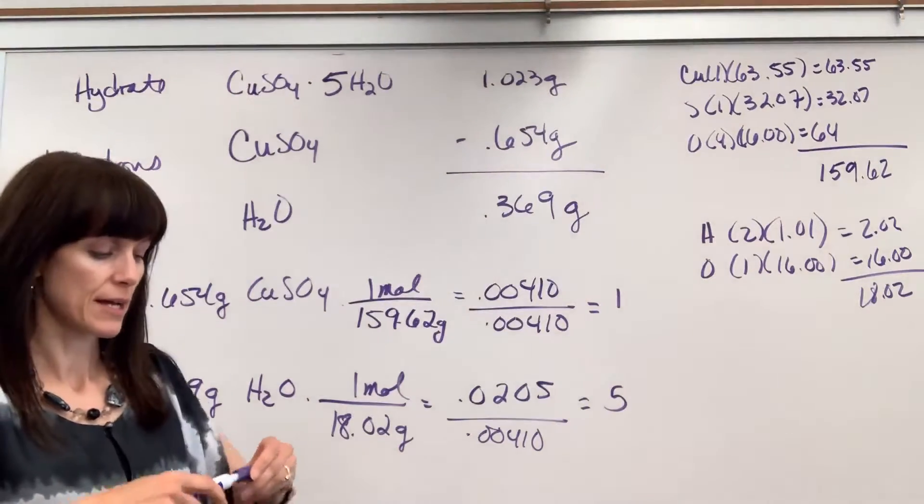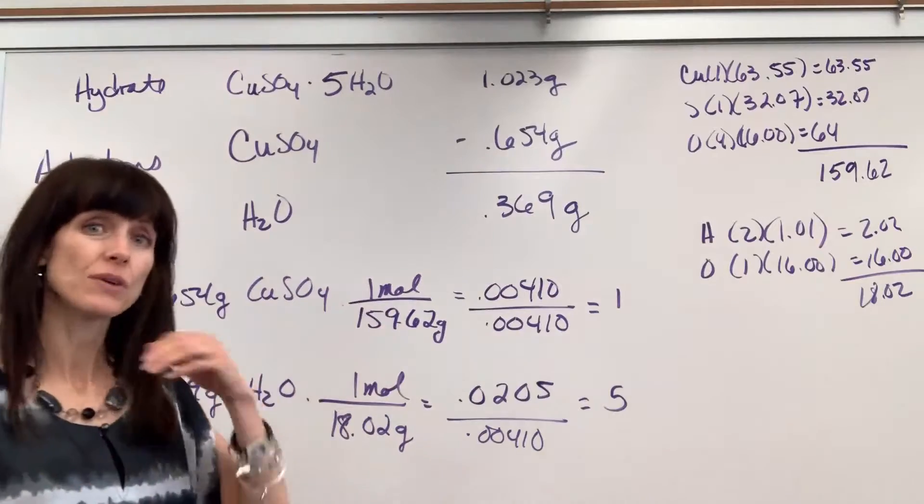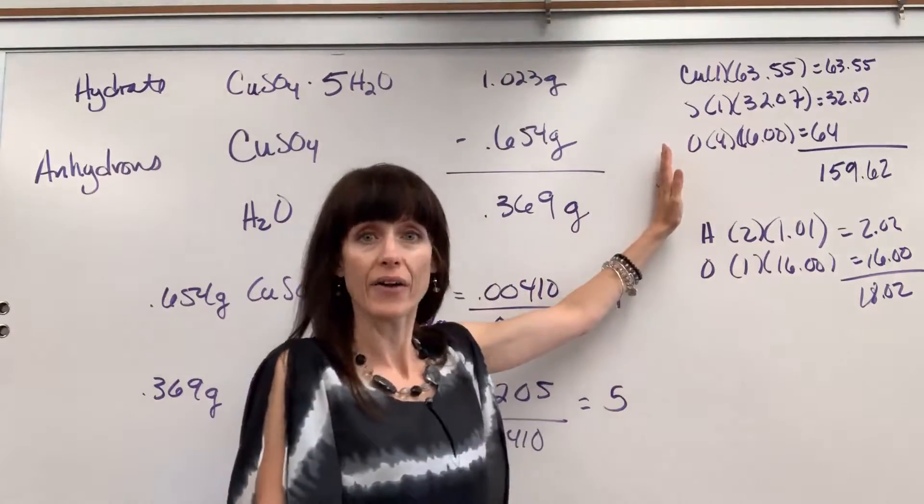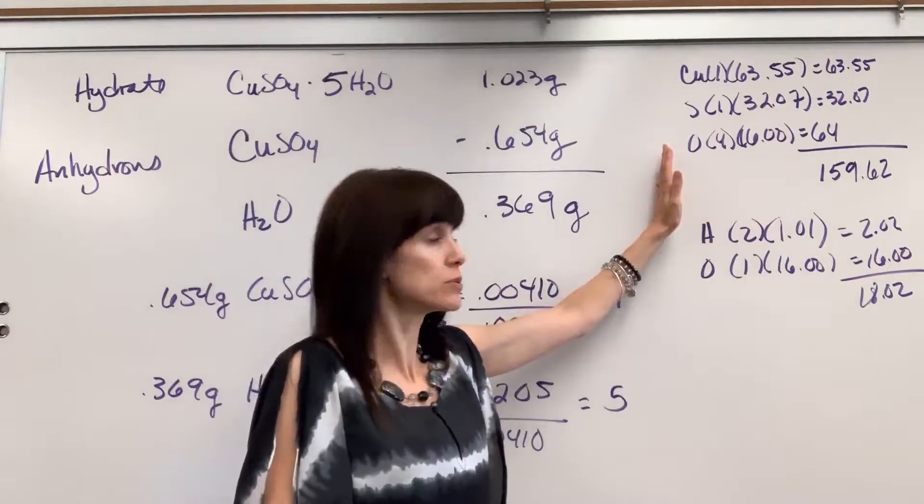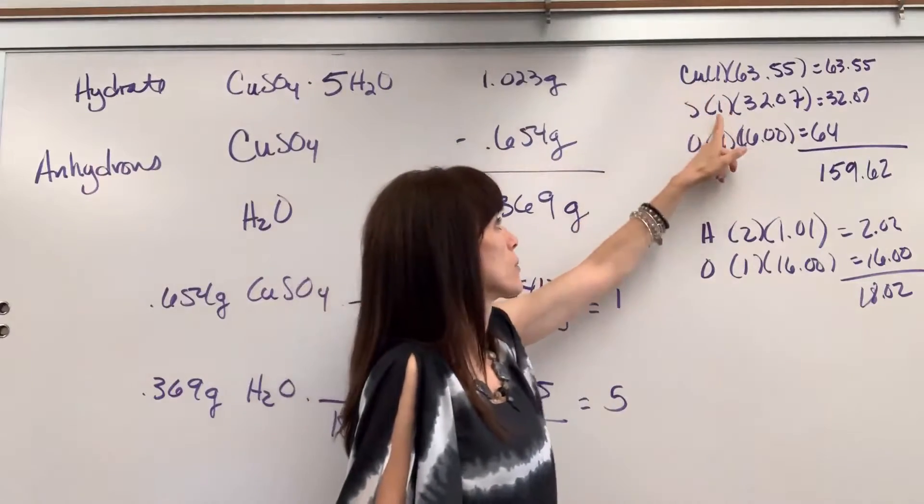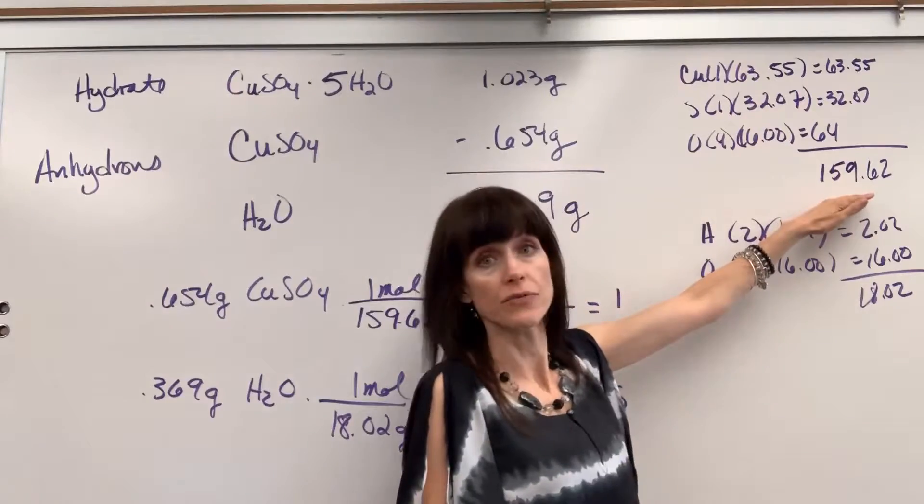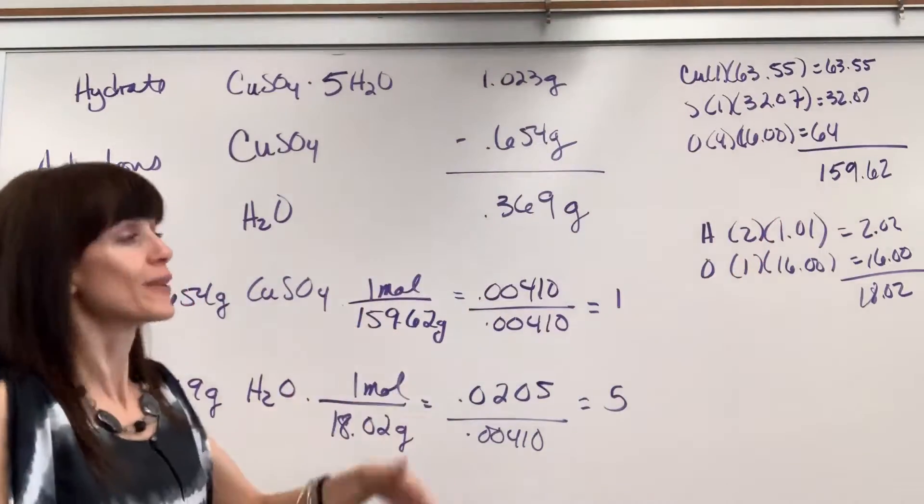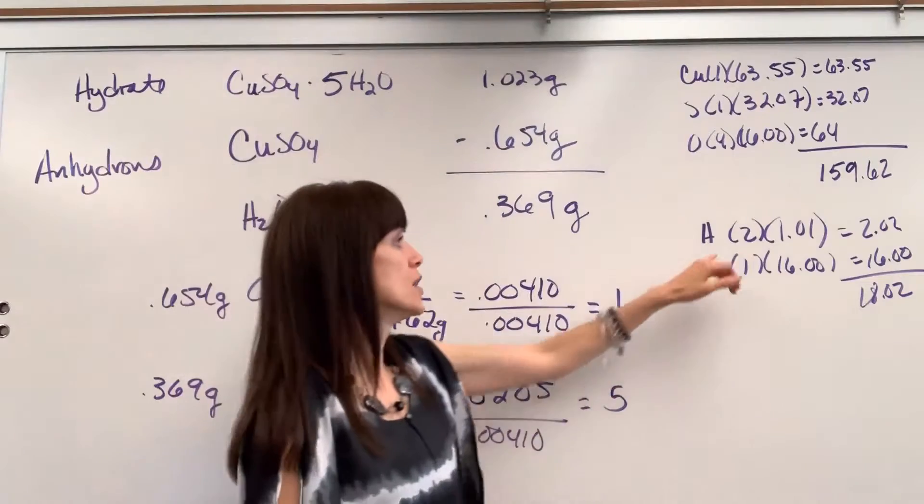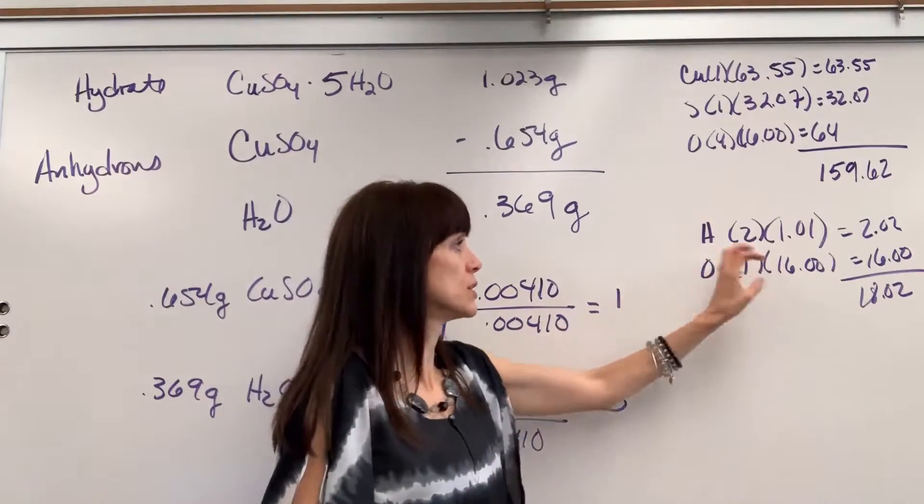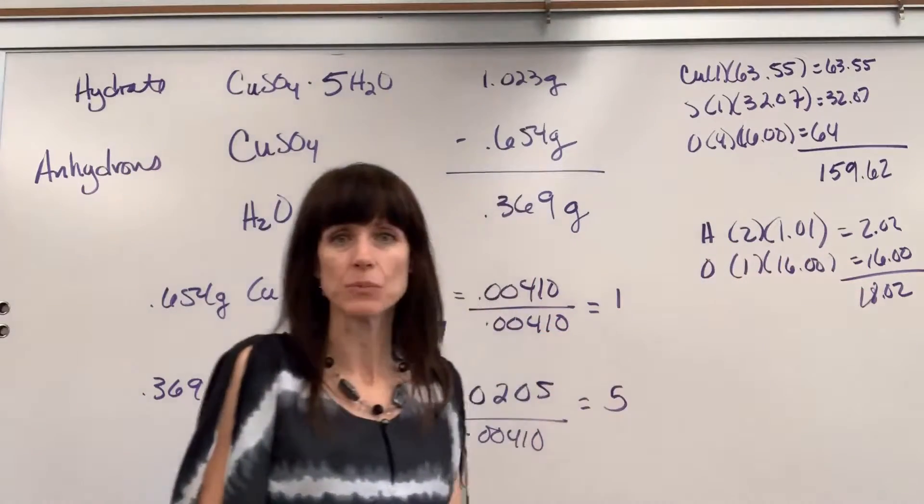Now just in case you had questions, I wrote over here how to add up the molar mass of the copper 2 sulfate. I add one copper, one sulfur, four oxygens, put the molar masses, multiplied, added, got 159.62. That's where that molar mass came from. And then water you probably have memorized. Two hydrogens, one oxygen, multiplied, added, it's 18.02.